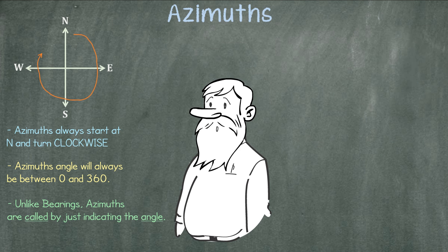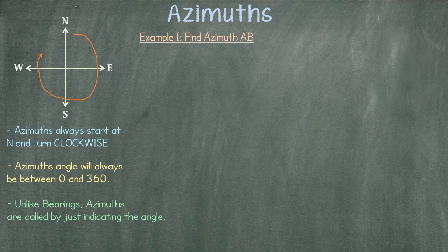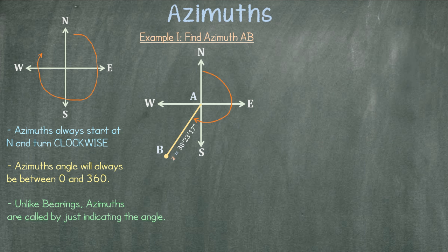Now let's work some examples to better illustrate the items we just mentioned. In the first example we are asked to find the azimuth AB, giving the following information. We start at the north and turn to the right towards line AB.